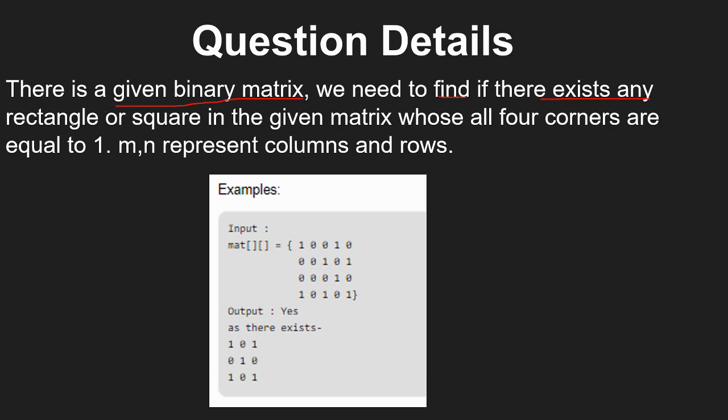For example, in this input matrix, if you see clearly, this is the required rectangle with ones at the four corners, and thus we print this out in the output.